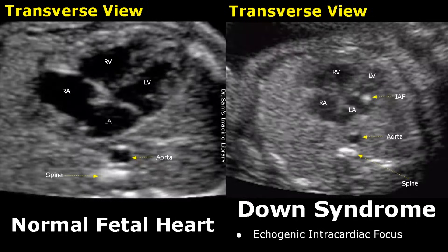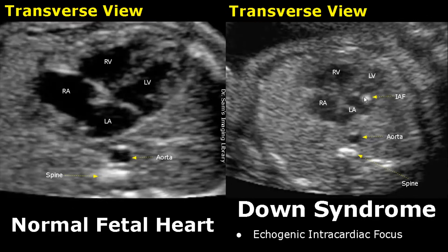Echogenic intracardiac focus is a hyperechoic structure seen within the fetal heart. It looks like a hyperechoic dot. In the normal image, no such hyperechoic structure is seen within the heart. This can be seen in a fetus with Down syndrome.